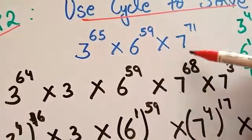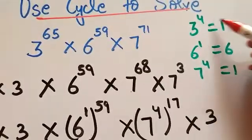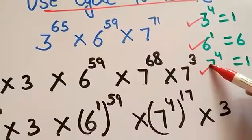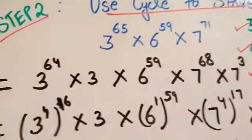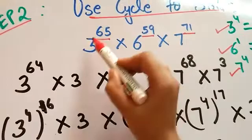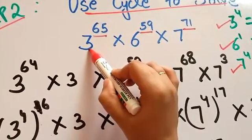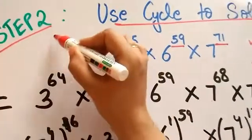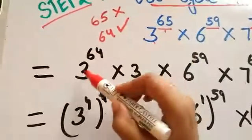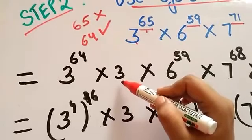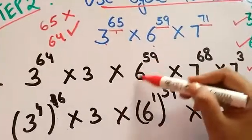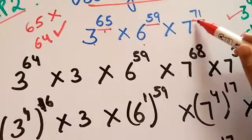The cycles we found are: 3 raised to power 4 equals 1, 6 raised to power 1 equals 6, and 7 raised to power 4 equals 1. Now make all the exponents as multiples of their cycles. For 3, the cycle is 4. Since 65 is not divisible by 4 but 64 is, write it as 3 raised to power 64 into 3. For 6, the cycle is 1, so simply write 6 raised to power 59.